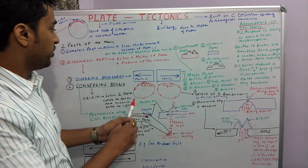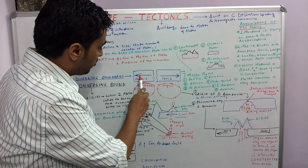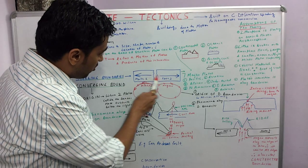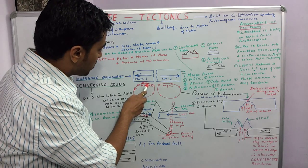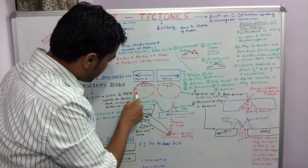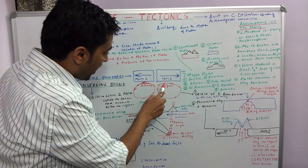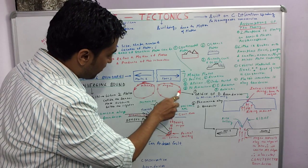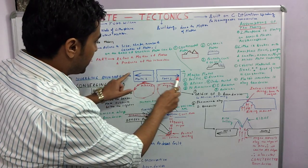The diverging plate boundaries are those boundaries in which two plates move away from each other. We can see in this diagram that plate 1 is moving away from plate 2. This movement happens because of the underlying magma which moves and along its movement it also drags the plate lying above it. Similarly, the other plate also moves in the opposite direction because of the magma moving in a cyclic fashion.